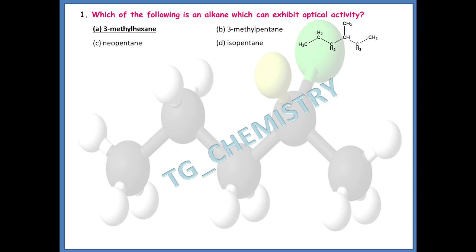The structure is shown to help you understand that for a molecule to be optically active, the compound must have at least one chiral center. If you look at the carbon center, this carbon is attached with four different groups: one hydrogen, one methyl, one ethyl, and one propyl group. That makes this a chiral carbon, which is why this alkane can exhibit optical activity.